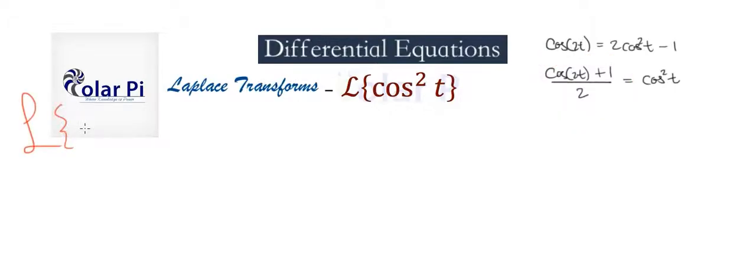So then we see that the Laplace transform of cosine squared t is equal to the Laplace transform of cosine 2t plus 1 divided by 2.